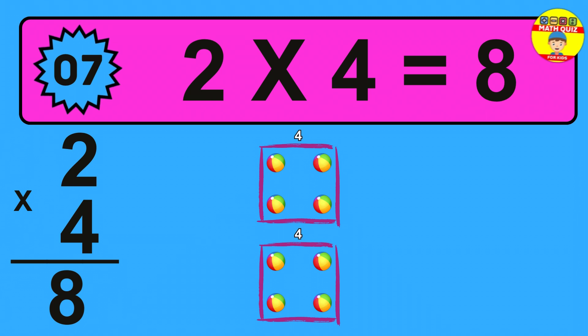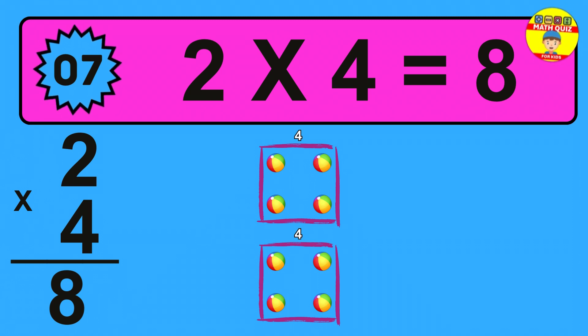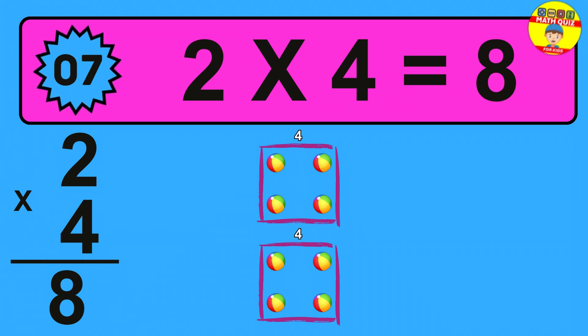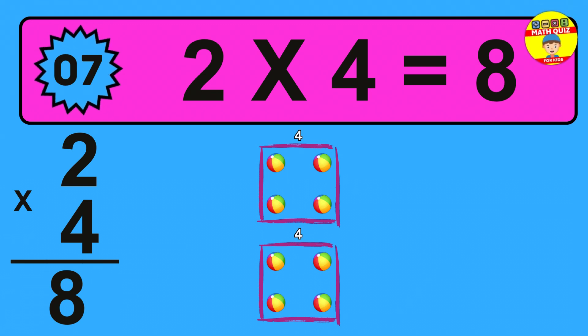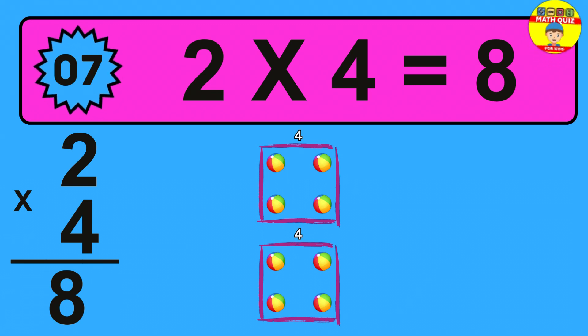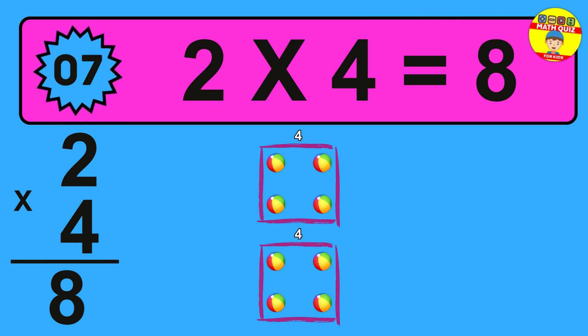2 times 4 is 8. To calculate, we have 2 groups with 4 balls each one. So how many balls do we have? 8 balls.